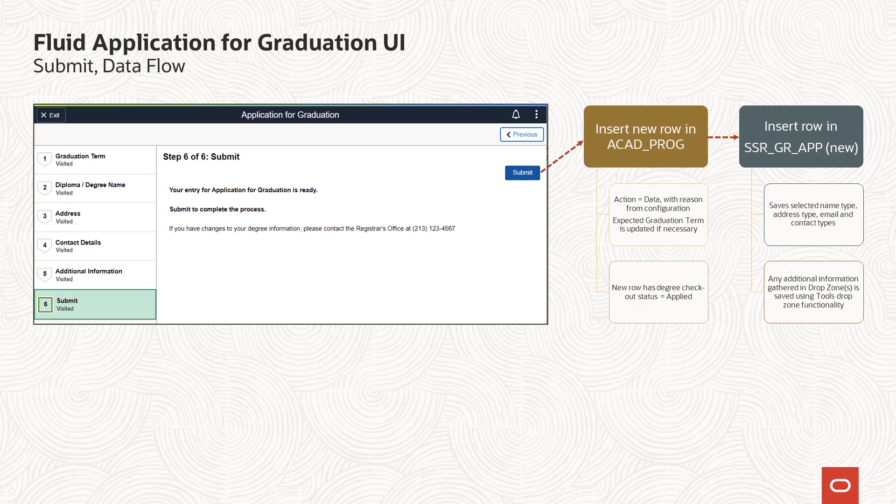When the application is submitted, the system updates the student's program stack with a data change row. If you have defined a specific action reason, that will also be used. This emulates the behavior of the classic self-service, but includes an enhancement to update expected graduation term as part of the data change row.